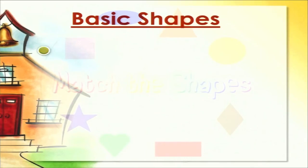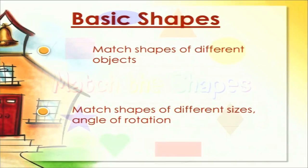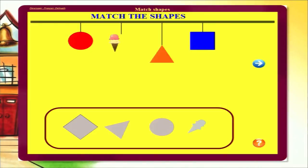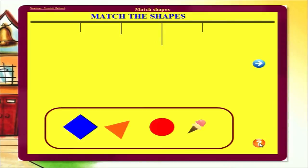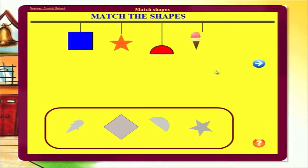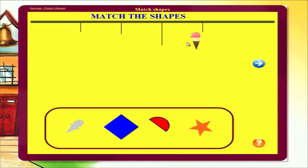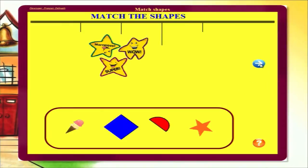The first topic is basic shapes. The basic building block of geometry is the knowledge of shapes. We have activities for matching shapes of different objects, then with different sizes, and then with different angles of rotation. In the activity, different shapes and holes are shown and the child must match each shape to its correct hole. If a shape is matched incorrectly, it returns to its original position. A hint button is available and if the child gets confused, clicking it will show all shapes matched correctly. A next button generates another set of shapes, and if the child matches all correctly, stars appear to encourage him.